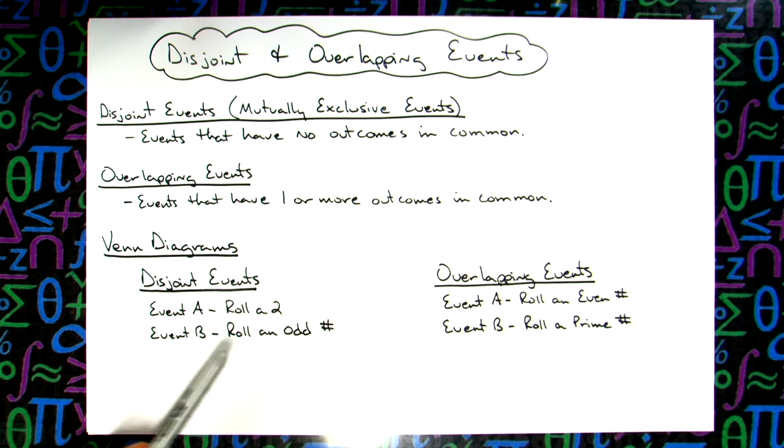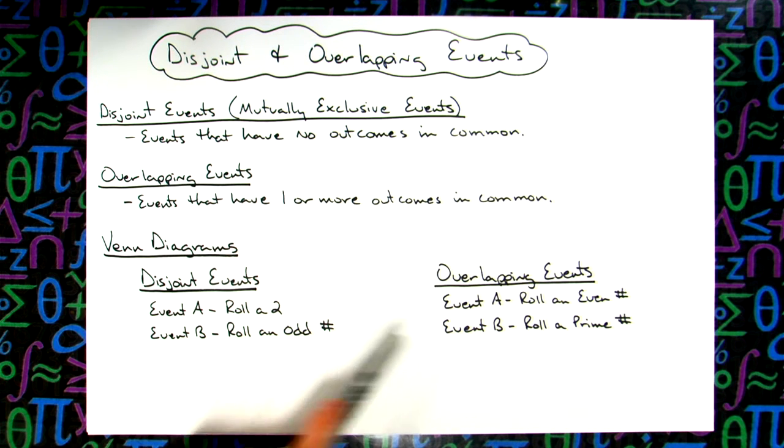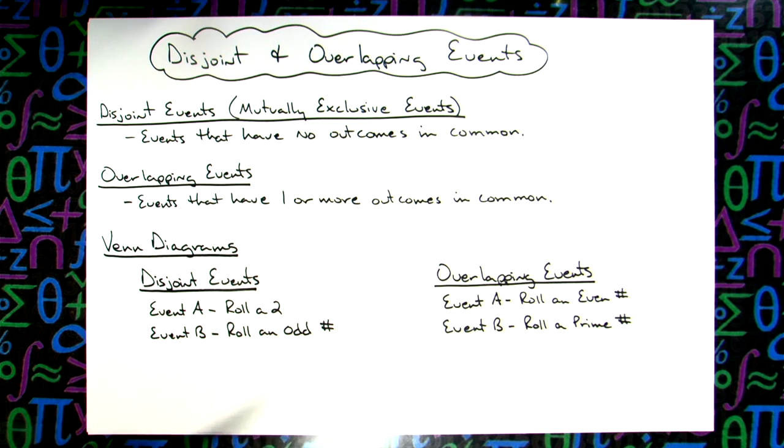So what I've got here is we're going to take a look at disjoint events and overlapping events and we're going to draw a Venn diagram to visually look at this and see what it's going to look like.